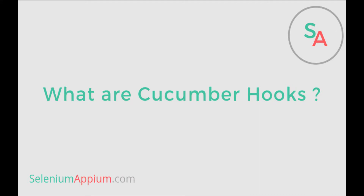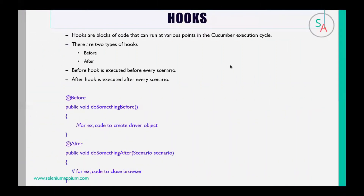Let's talk about hooks. Hooks are blocks of code that can be executed at various points in the Cucumber execution cycle. There are two types of hooks: one is the before hook and the second one is the after hook.